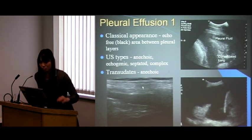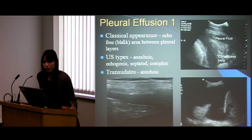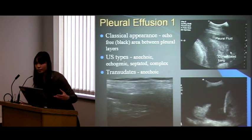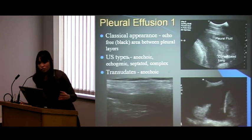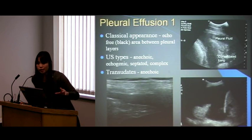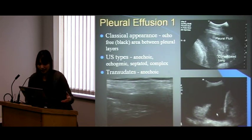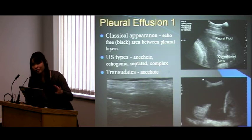Pleural effusions are one of the most common requests. The classical appearance is an anechoic — just black — area between the pleural layers: a nice parietal layer, visceral layer, and just blackness in between. What looks a bit like a pancake is just consolidated lung that's been squished together by the fluid. Transudates are typically anechoic, but remember: exudates can appear black as well, so you can't assume it's a transudate just because it's all black.